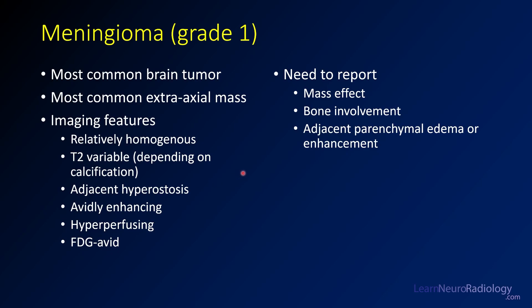When writing a report about meningiomas, you need to address: what is the mass effect, is there involvement of the adjacent bone, and is there adjacent parenchymal edema or enhancement? If you see edema, that makes it more likely there is brain invasion. Meningiomas that have brain invasion are automatically grade two or higher.